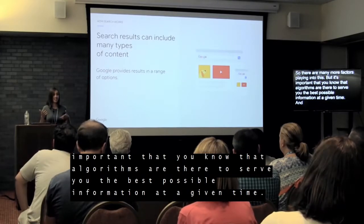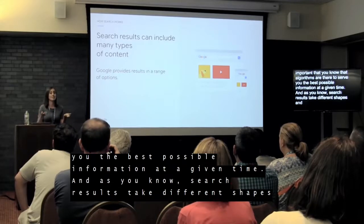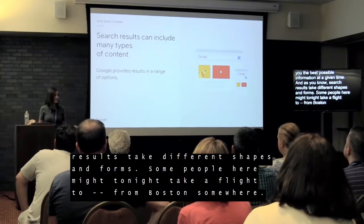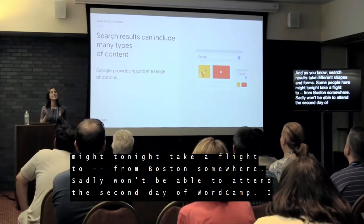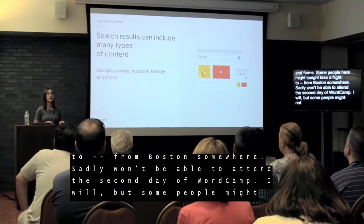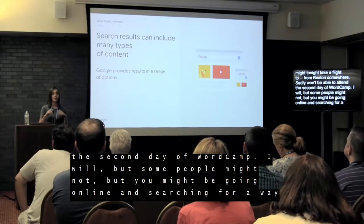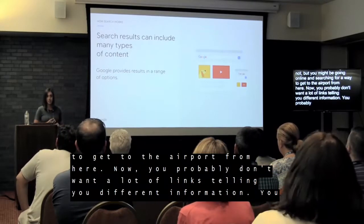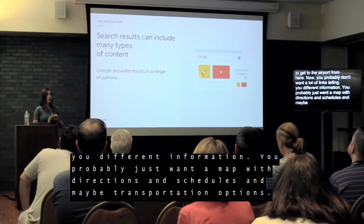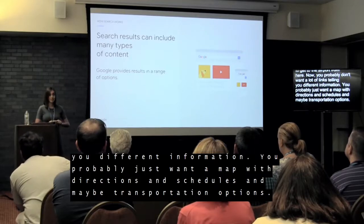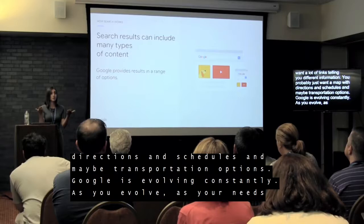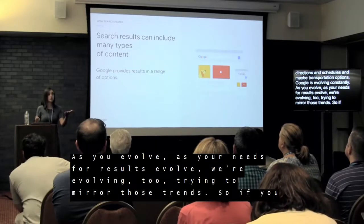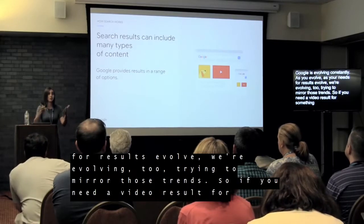Search results take different shapes and forms. For example, if you're looking for a way to get to the airport, you probably don't want a list of links — you want a map with directions, schedules, and transportation options. Google is constantly evolving to mirror trends: if you need a video result, we'll provide a video result, not just a list of links.